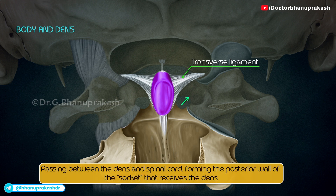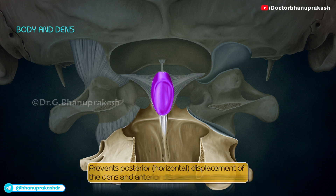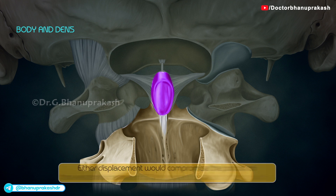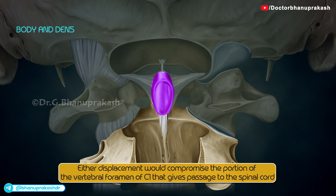The transverse ligament passes between the dens and spinal cord, forming the posterior wall of the socket that receives the dens. Thus, it prevents posterior or horizontal displacement of the dens and anterior displacement of the atlas. Either displacement would compromise the portion of the vertebral foramen of C1 that gives passage to the spinal cord.